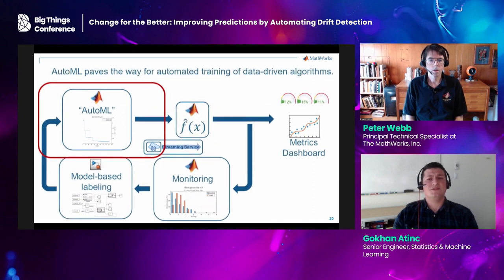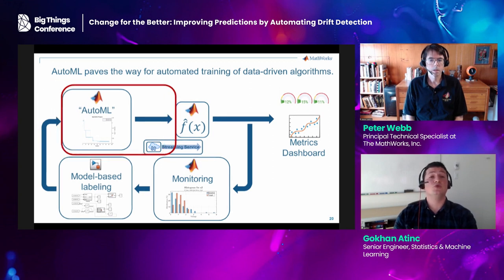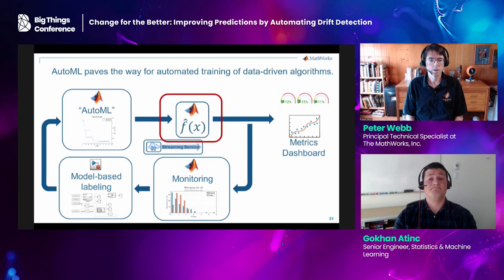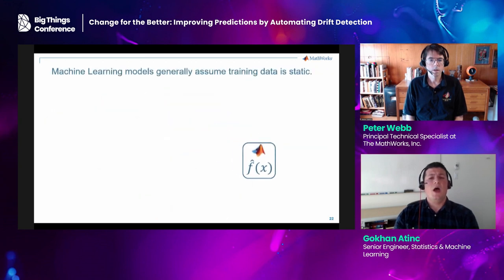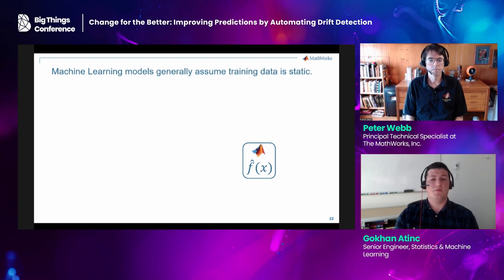When AutoML is done training, it will return a single machine learning algorithm that we can deploy to the production server and use for prediction. Up until now, our AutoML solution has been operating under the assumption that the data on which it trained does not change. Indeed, in most machine learning problems, there is an implicit assumption that the data used for training the model fully represents the underlying distribution of the whole feature space — in other words, it is assumed that the distribution of the data does not change.